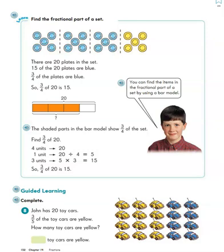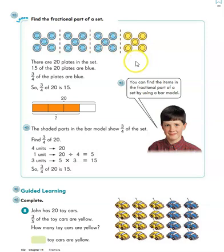So we can see here it's telling us that there are 20 plates in the set, and that 15 out of 20 are blue. So we can see that from the picture — we have 5, 10, 15, 20 — and we can see that 15 of them are blue and 5 of them are yellow.